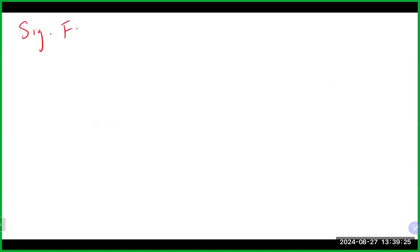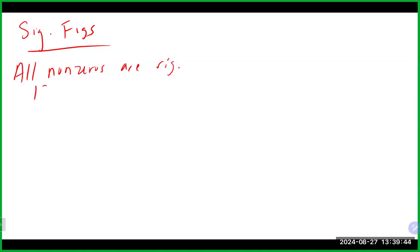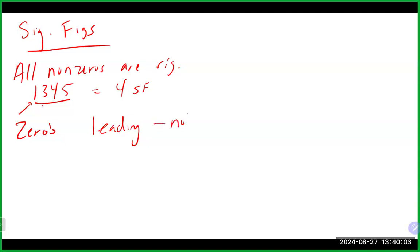Speaking of significant figures, there are rules to count them. First, all non-zeros are significant — so 1, 3, 4, 5 would all be significant figures, giving 4 significant figures. The zeros can give people trouble. Leading zeros, which come before your first non-zero, are not significant. For example, 0.0044 — none of those leading zeros count; we start counting at the 4, giving 2 significant figures.